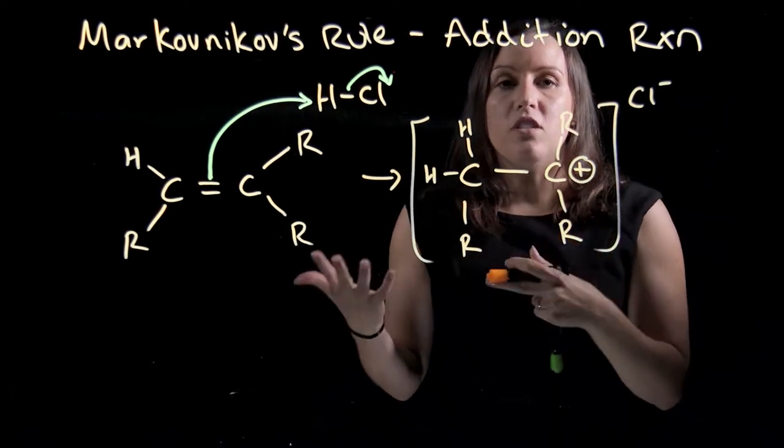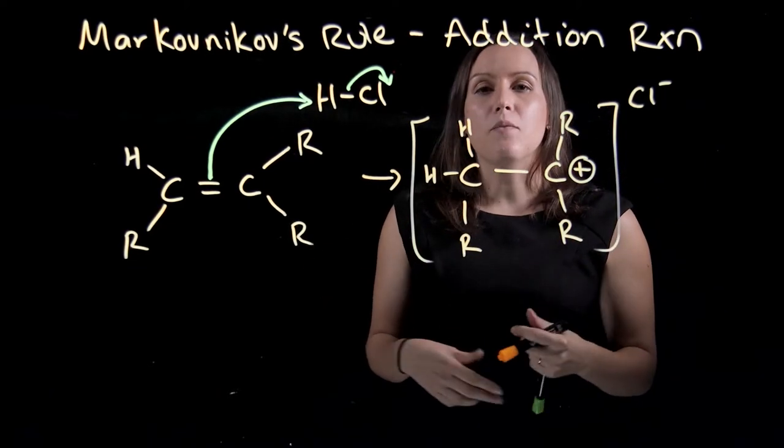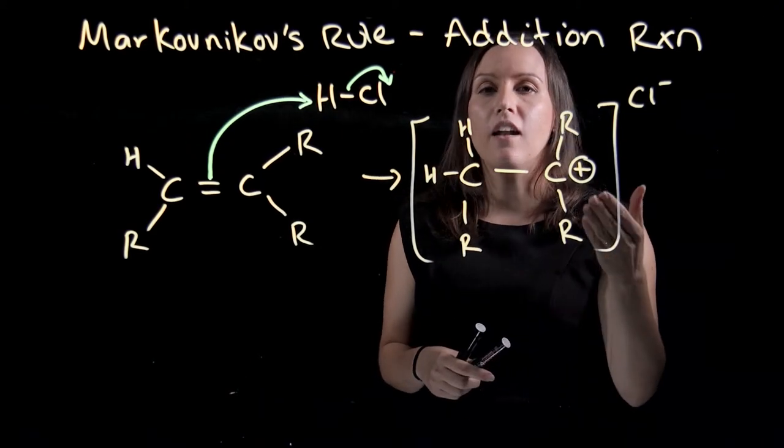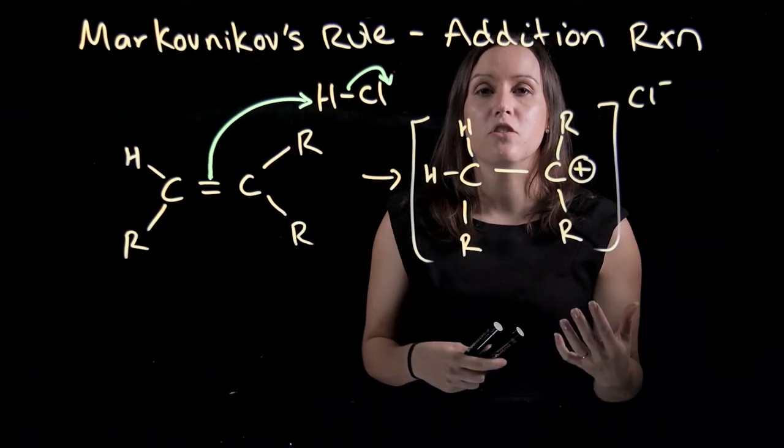When you're deciding which side gets the hydrogen, you need to think about which side will produce the more stable carbocation. The more stable carbocation will be on the carbon that's the most substituted.